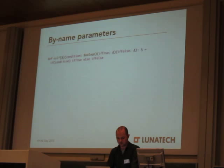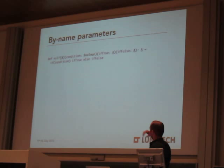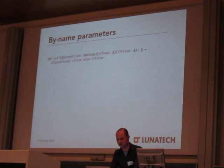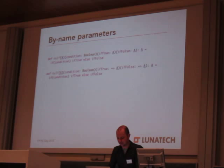Scala has strict evaluation by default. So if we were trying to make a custom control structure with a condition, something to return if true, and something to return if false, that's not great because both branches would be evaluated and any side effects would be triggered. But you can use a by-name parameter by adding an arrow (=>) in front of the type. It wraps the expression and only evaluates it when actually needed. This lets us create our own control structures.